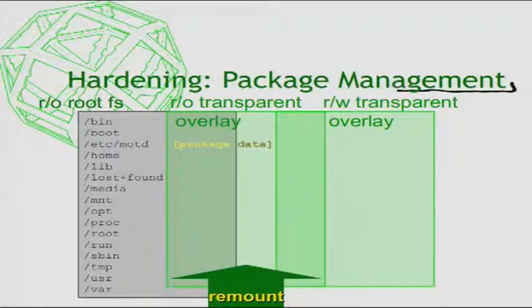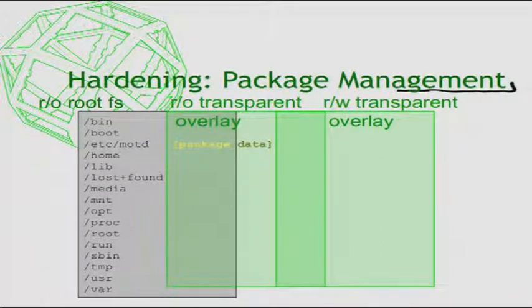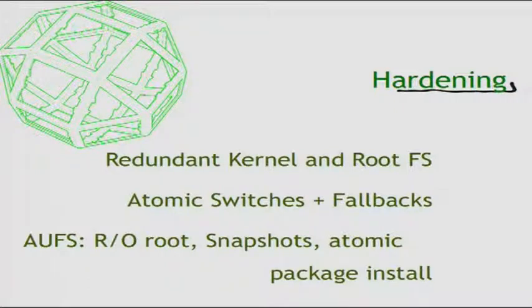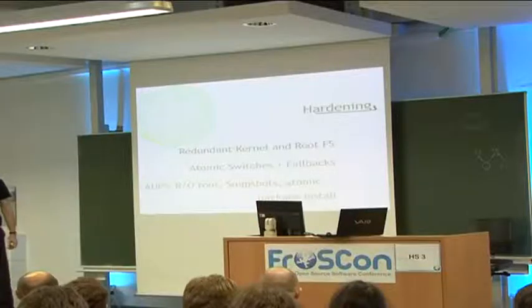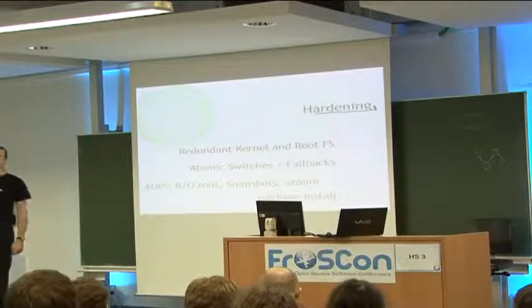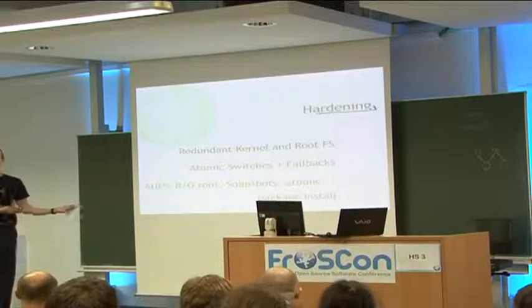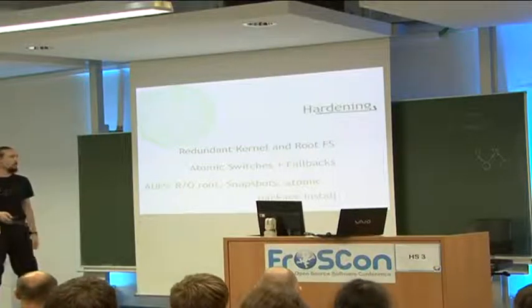This gives you atomic package management — it's a nice trick. For hardening, we're aiming for redundant kernel and redundant rootFS. NAND flash is really cheap so what gives? We always look for atomic switches when doing something new. If you do sanity checks, you also need fallbacks — because why do the sanity checks if you have nothing to fall back to if sanity fails? Transparent file systems are so cool, no one seems to use them, and you can build all kinds of amazing stuff with them, like atomic package install.